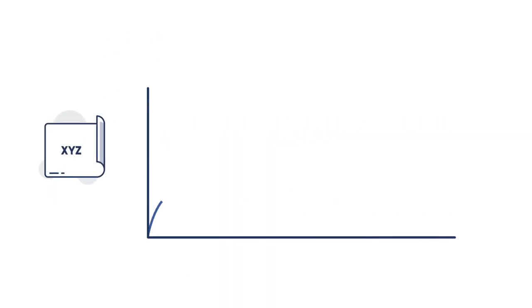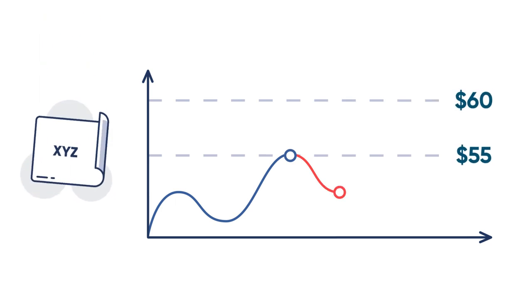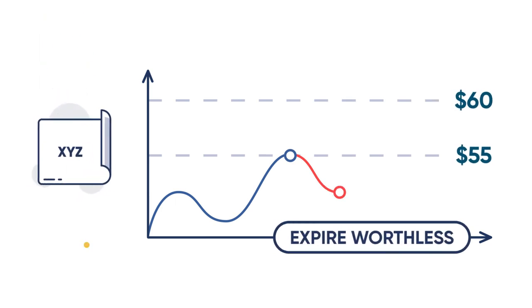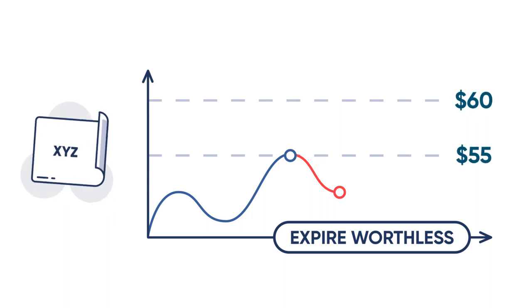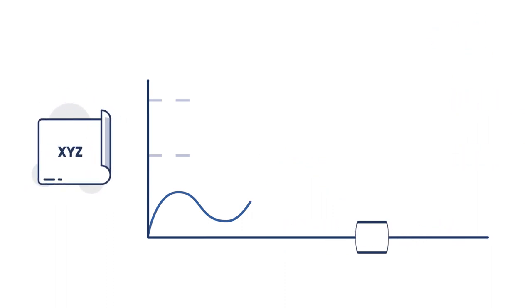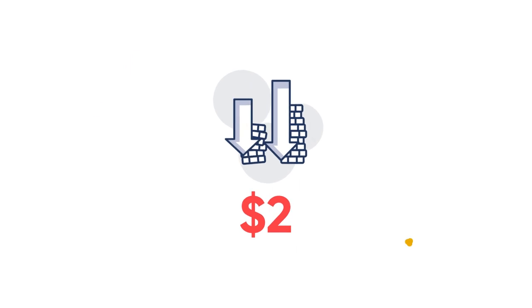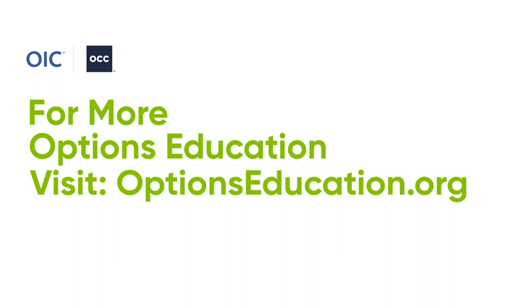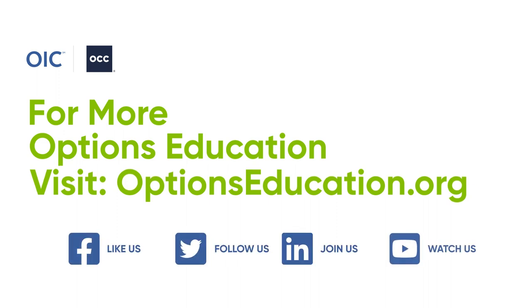If the stock is trading below $55 at expiration, both options expire worthless and unexercised — the spread is also worthless, and therefore you'd lose the entire $2. To learn more about the bull call spread and other strategies, visit the OIC website at optionseducation.org.